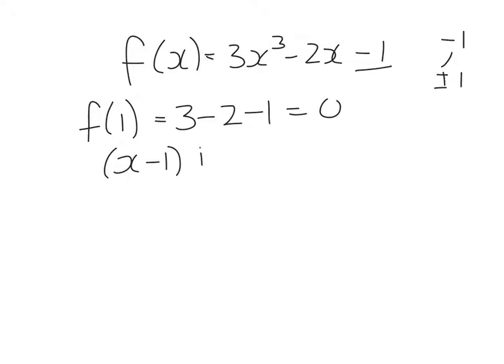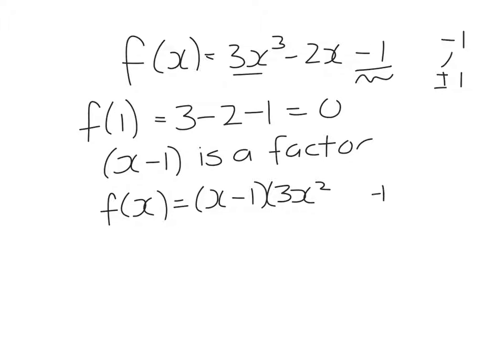I'm now going to factorize this by inspection. So I have x minus one. I want three x cubed, which means I have to have three x squared. I want minus one on the end, which means I have to have a plus one.